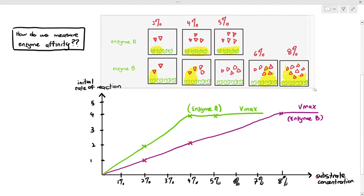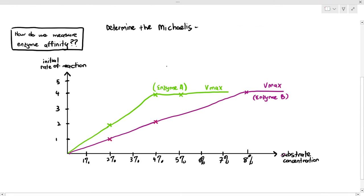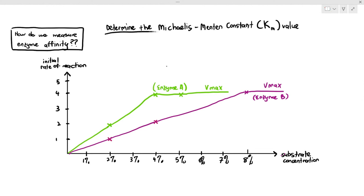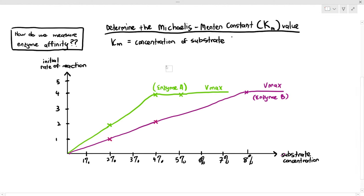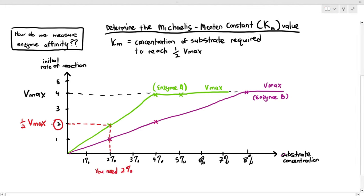To further quantify this, we determine something known as the Michaelis-Menten constant, which is the Km value — not kilometers. The Km value, or the Michaelis-Menten constant, is basically the concentration of substrates required to reach half of the Vmax value. For enzyme A, the Vmax value was 4, so half of Vmax is 4 divided by 2, and you must determine the substrate concentration at that point.